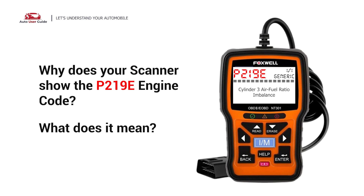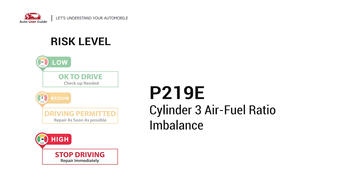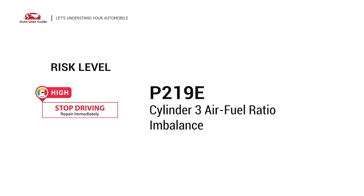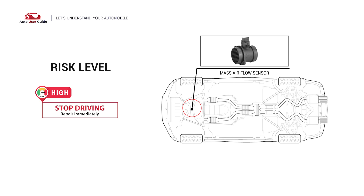Why does your scanner show the P219E engine code? What does it mean? P219E is a diagnostic trouble code for cylinder 3 air-fuel ratio imbalance. It indicates that the engine control module has detected that the air-fuel mixture in cylinder number 3 is significantly different from the other cylinders, causing an imbalance in the engine's combustion process. Under this circumstance, stop driving and repair your vehicle immediately.